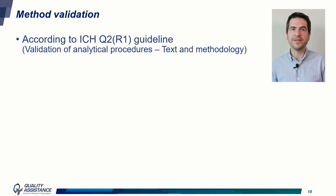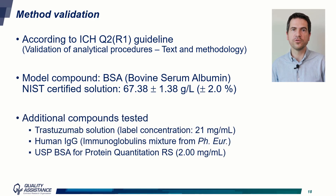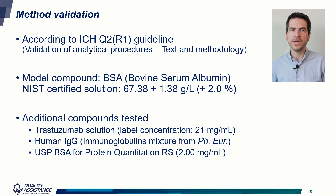The method was validated according to ICH Q2 guidelines to show that it had suitable performance for use in a GMP environment. BSA reference standard from NIST was used as a model compound, as it is one of the few certified protein materials available. We also tested additional compounds such as trastuzumab, an approved therapeutic monoclonal antibody, a human IgG mixture from the European Pharmacopoeia, and a USP BSA standard.